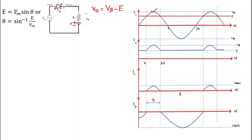The sinusoidal voltage VS and the DC EMF E intersect at a point at angle theta. At this point theta, the sine wave equation gives VM sin(θ) equals E. From this equation we get theta equals sin⁻¹(E/VM).